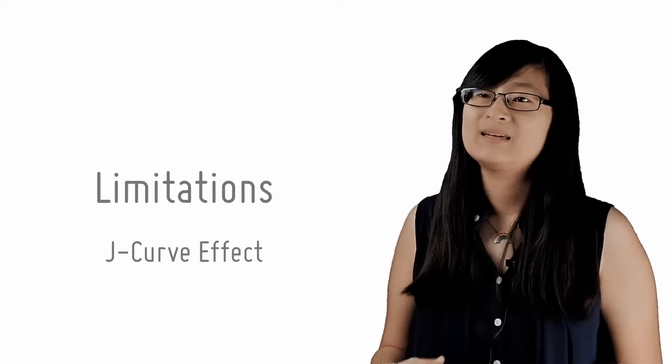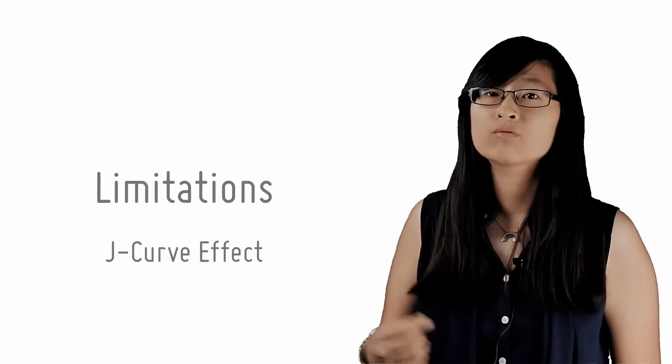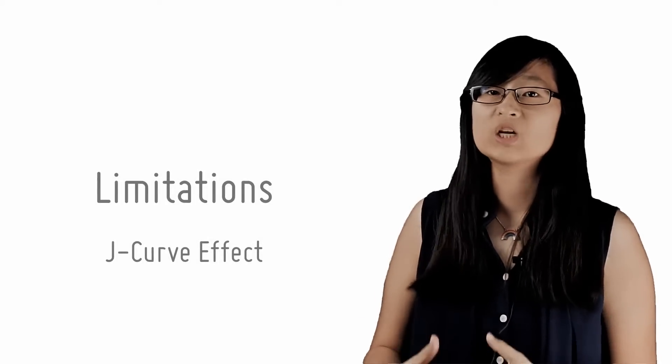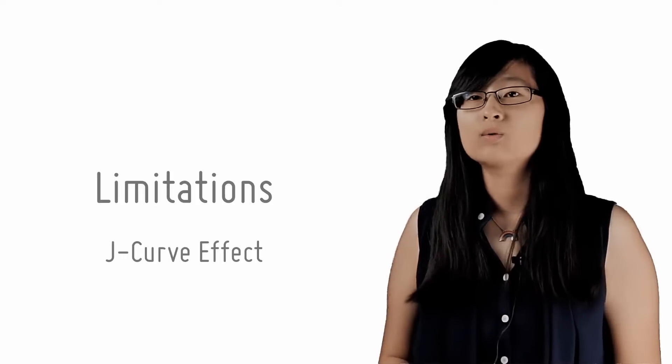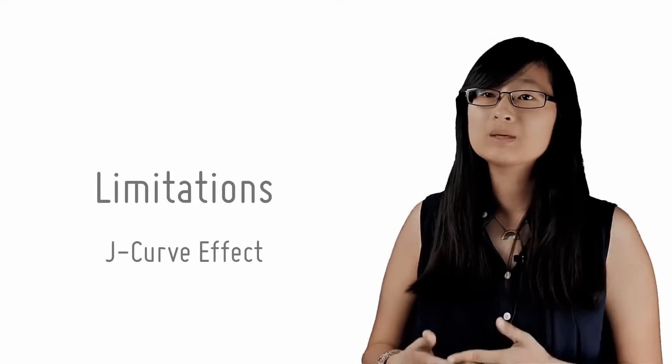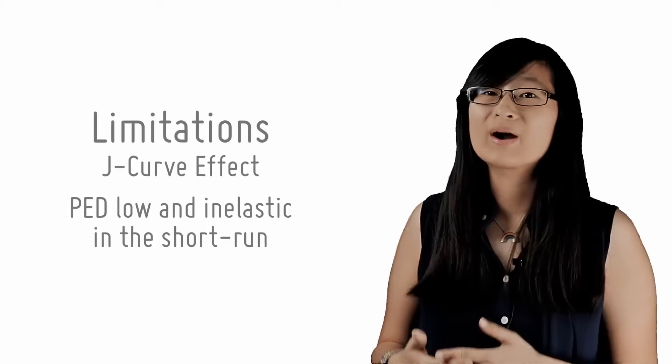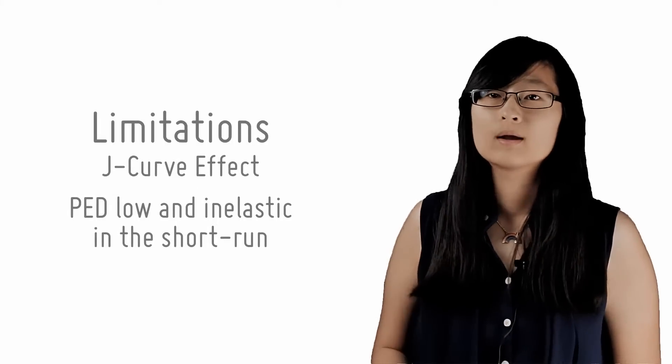In the previous lesson, we explained that in order to improve the BOP by devaluing one's currency, the ML condition must hold. This leads us quite nicely on to one of the main limitations of exchange rate policy with regard to BOP, and this is called the J-curve effect. This problem arises because the PED for imports and exports are likely to be low or inelastic in the short run.